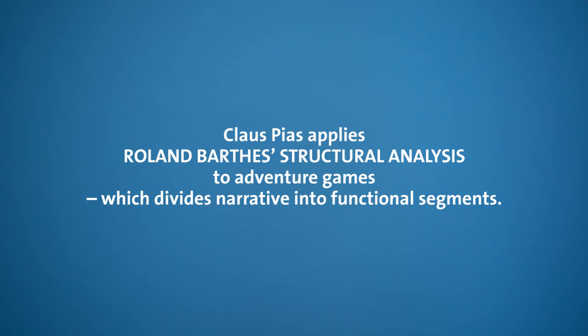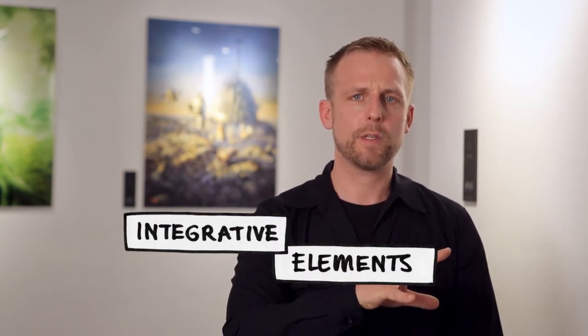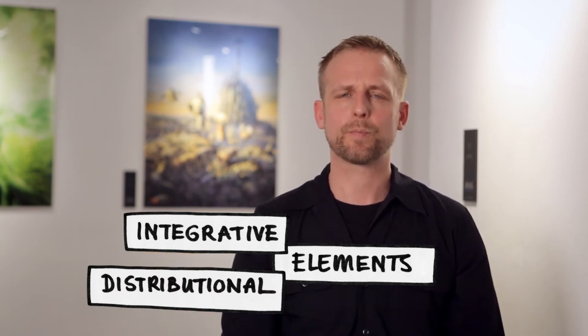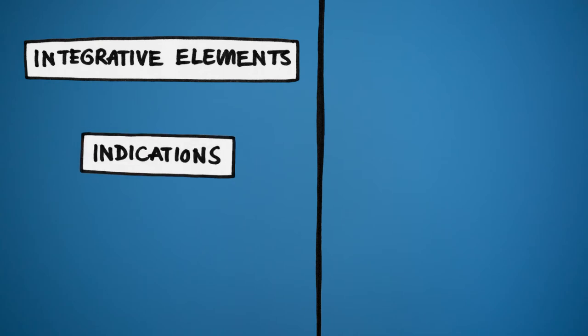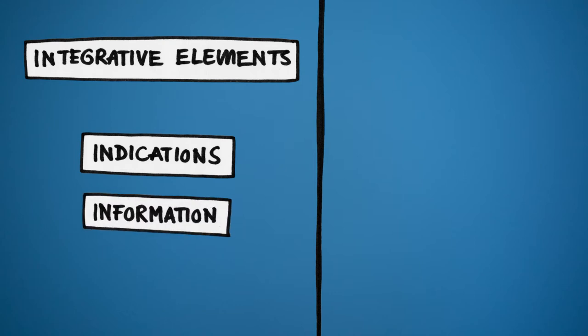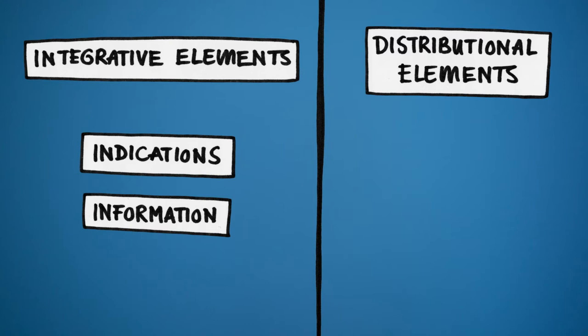Klaus Piers applies Roland Barthes' structural analysis to adventure games, which divides narrative into functional segments. We can distinguish integrative elements from distributional elements. Integrative elements are only indirectly functional — subdivided into indications, which convey character, feeling, and atmosphere, and information, which enables the player to comprehend spatial relations and orient themselves. Distributional elements, on the other hand, are distributed functionalities that can be collected in one place and used in another — for example, the objects one has to find in an adventure game, which then have to be brought to a certain place on the map and used in a certain way to make progress.